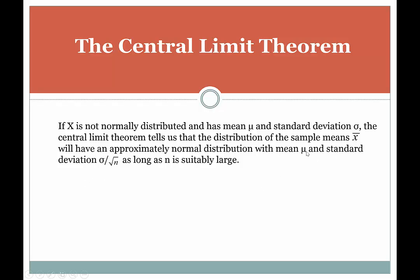These properties — the idea that the mean for x-bar is mu and the standard deviation is sigma divided by the square root of n — actually don't depend upon the central limit theorem. You don't need a large sample size for that to be true. That's just true algebraically. So for x-bar, its mean is mu (the population mean) and its standard deviation is sigma, meaning x-bar will always have a standard error of sigma divided by the square root of n. Those properties don't depend upon the sample size.